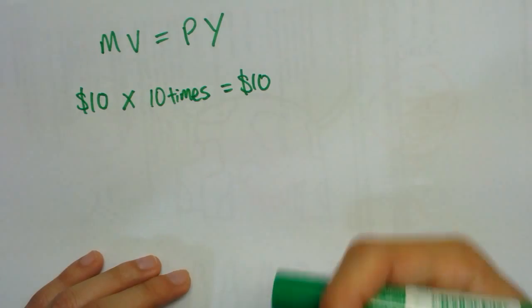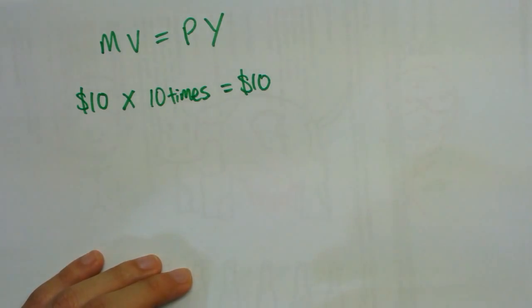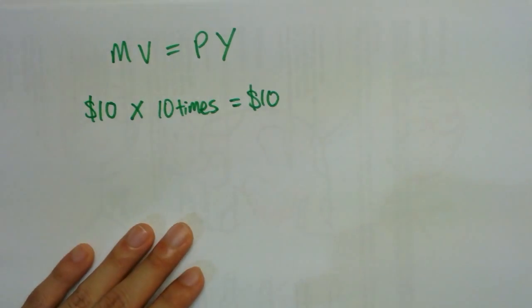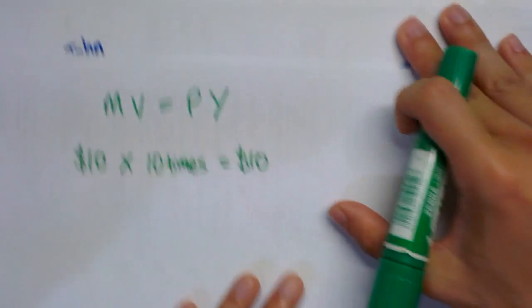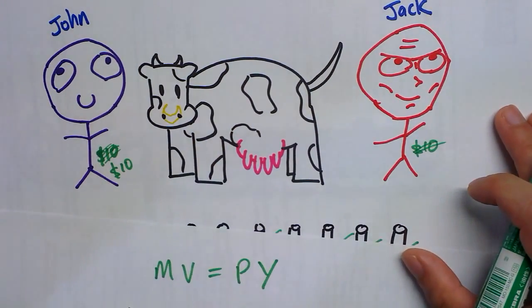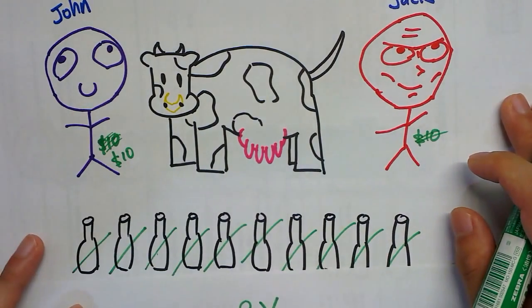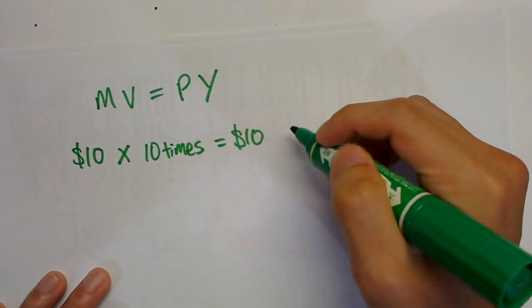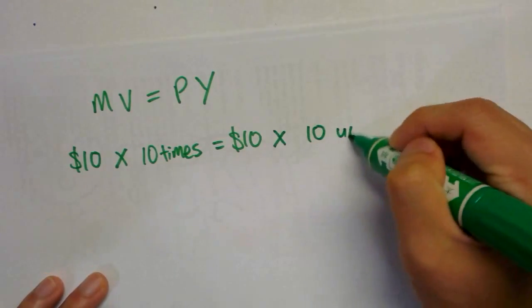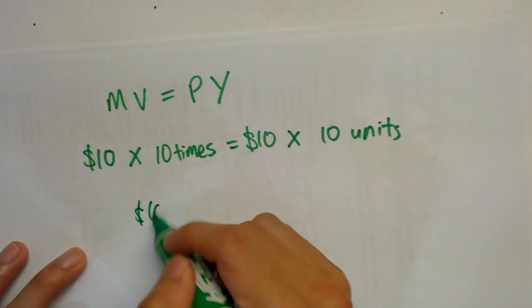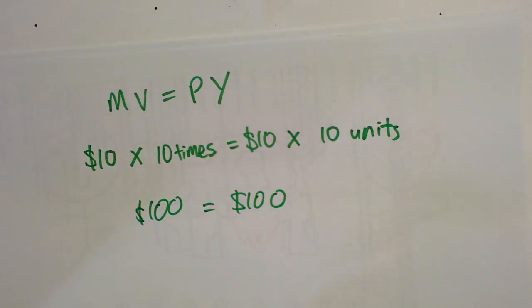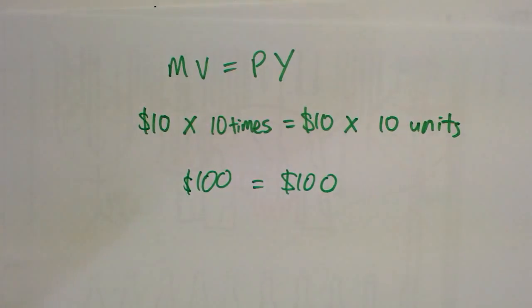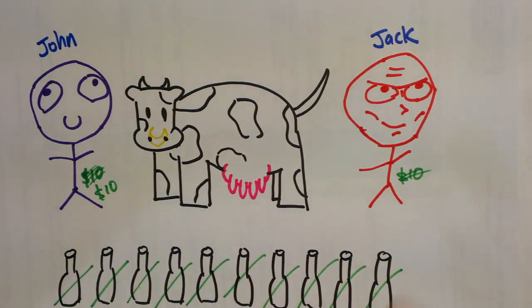What is the price level? One bottle of milk was sold for ten dollars, so P equals ten. And Y — output — is the total real amount of goods and services produced, which is ten bottles of milk. So P times Y equals ten times ten equals one hundred. A hundred dollars equals a hundred dollars — the equation checks out. This is how a smart economist came up with the Quantity Theory of Money.